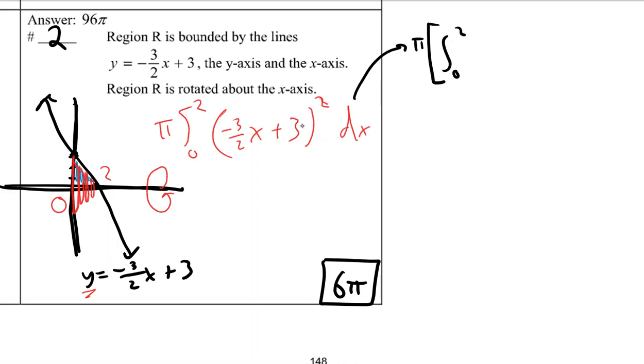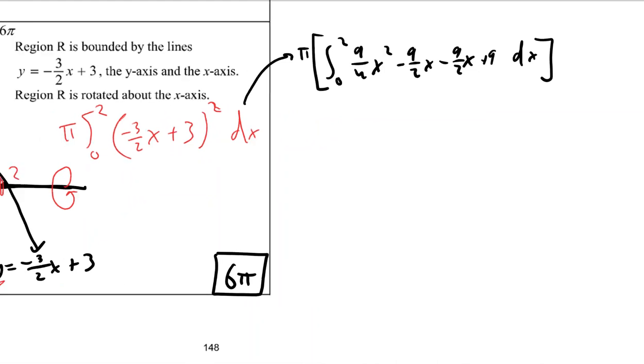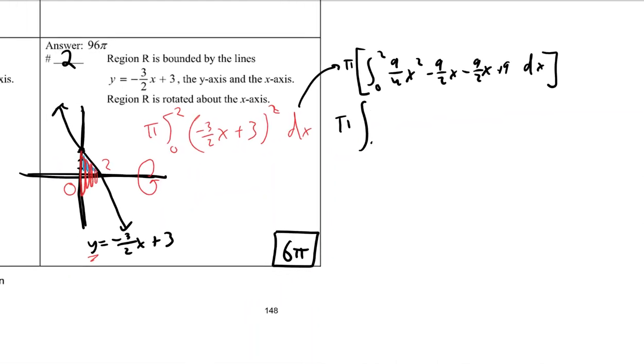So first off, if you square this, if you also tried to integrate it by hand, you don't get to just square these two things. This is like negative 3 halves x plus 3 times negative 3 halves x plus 3, so that gives you 9 fourths x squared minus 9 halves x minus 9 halves x plus 9. And then these two were like terms, so I added those together as much as I could. So I just foiled and then combined like terms.